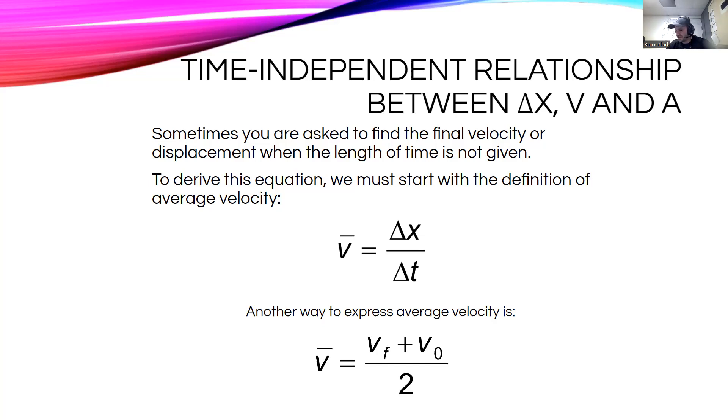Your average velocity is your change in distance over change in time. You know that if you travel 60 miles in one hour, you are traveling at 60 miles an hour. Another way to express your velocity is whatever your starting speed was, your final speed, and divide it by two.